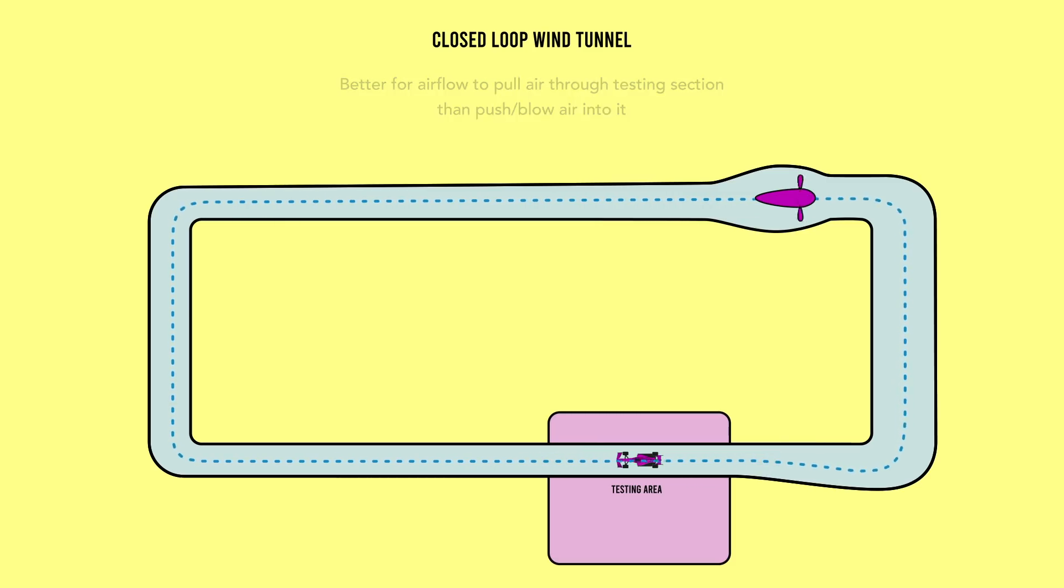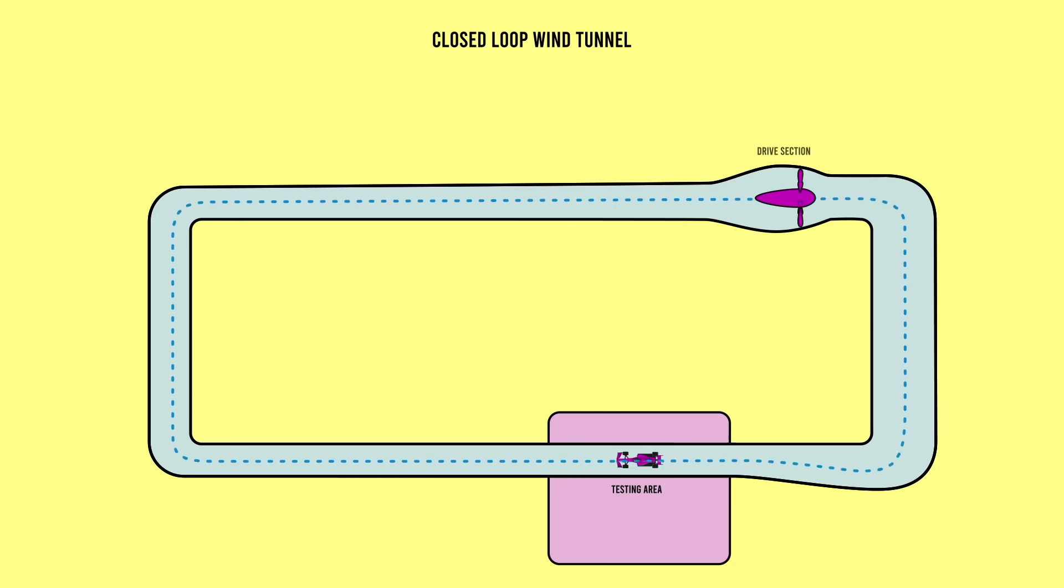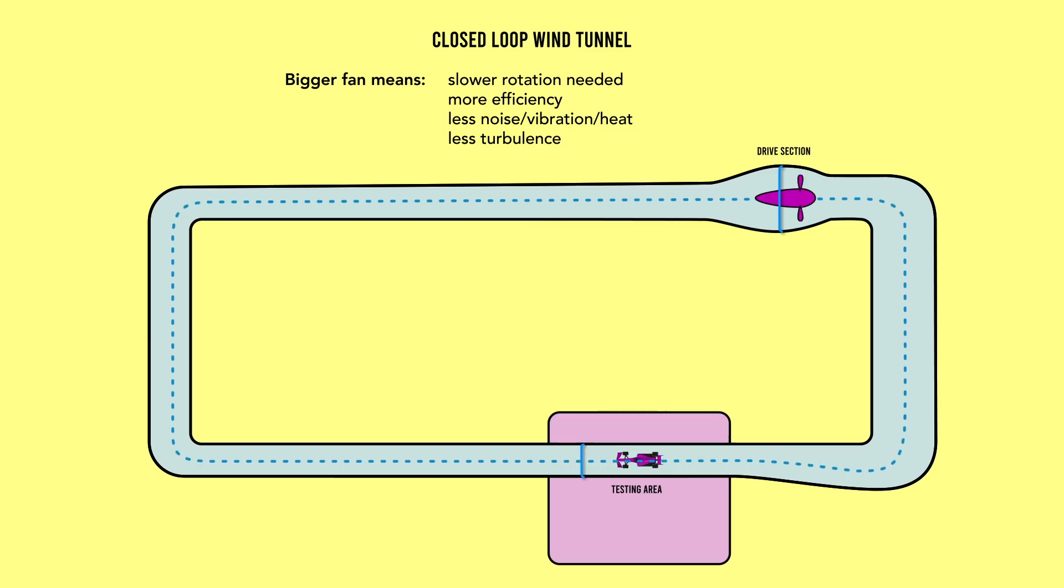But again, the air goes round and round and round so you could argue this is just wordplay. The drive section containing the fan is a lot bigger than the testing section. The bigger you make the fan, the less fast you have to spin it in order to reach the required airflow velocity, which is more efficient, less noisy, causes less vibrations through the facilities and stirs up less turbulence in the airflow.